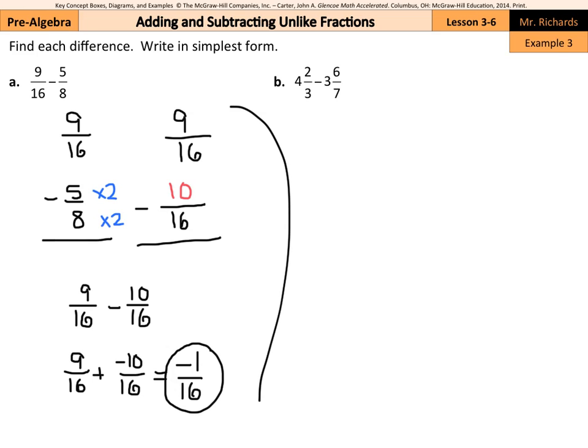What about B? Four and two-thirds minus three six-sevenths. Let's change these into improper fractions. Four times three is 12, plus two is 14 thirds, and this is going to be minus three times seven is twenty-one, plus six, twenty-seven sevenths.